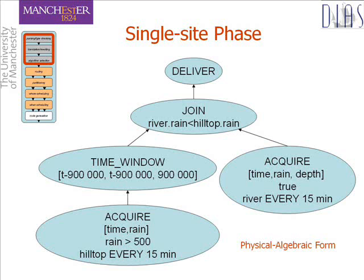In the single-site phase, the declarative query text is parsed into an internal form and type checked. The internal form is an abstract algebra based on the relational algebra. The algebra is enriched with windows on streams, which impose a definite cardinality on the inputs. This allows blocking operators, such as joins, to be well defined. The algorithm selection step gives rise to the physical algebraic form shown.